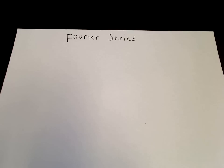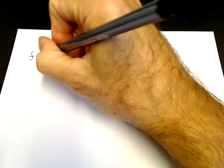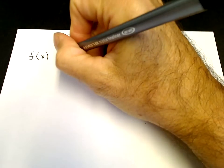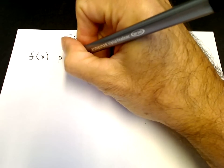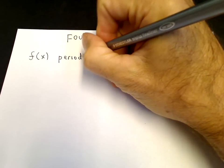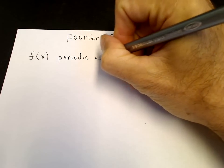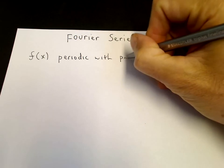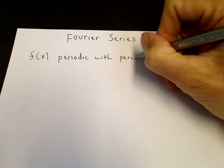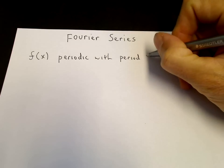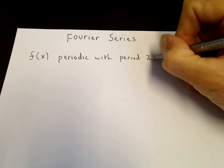In this video I'll explain how the Fourier series works. We have a function f, which is supposed to be periodic with period 2l.